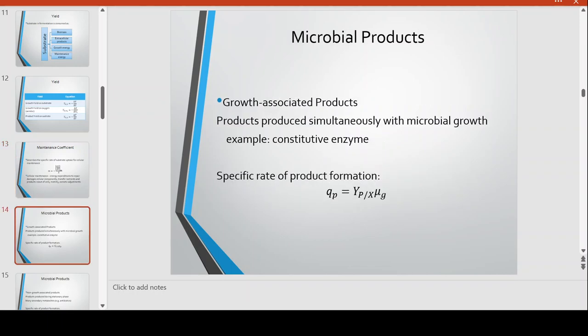Microbial products can be classified into two types. First are the growth-associated products, also called primary metabolites in industrial microbiology. These are products produced simultaneously with microbial growth and are always present in the cells — an example is constitutive enzymes, which are necessary for the cells to grow and survive. The specific rate for growth-associated products, QP, equals the yield of products per cell times mu G.